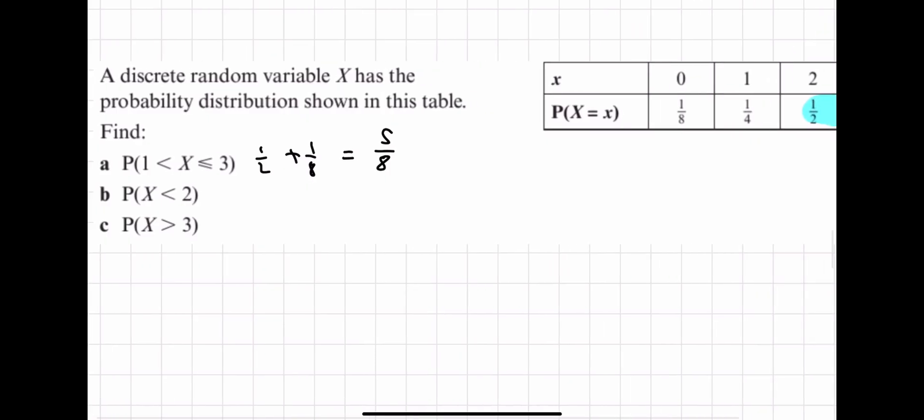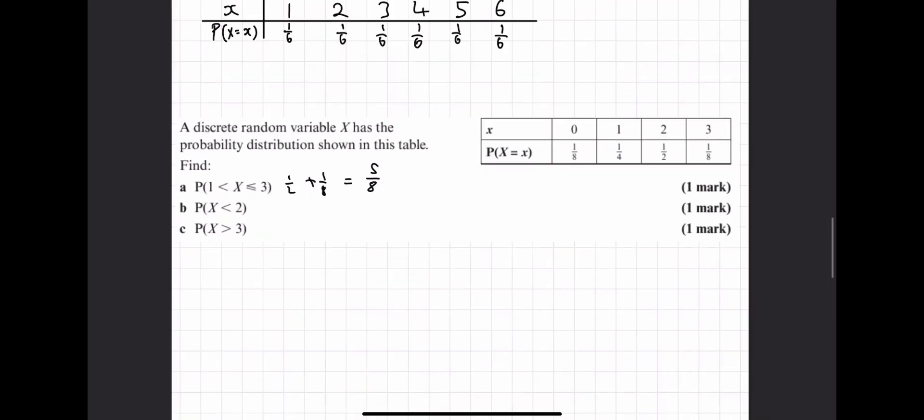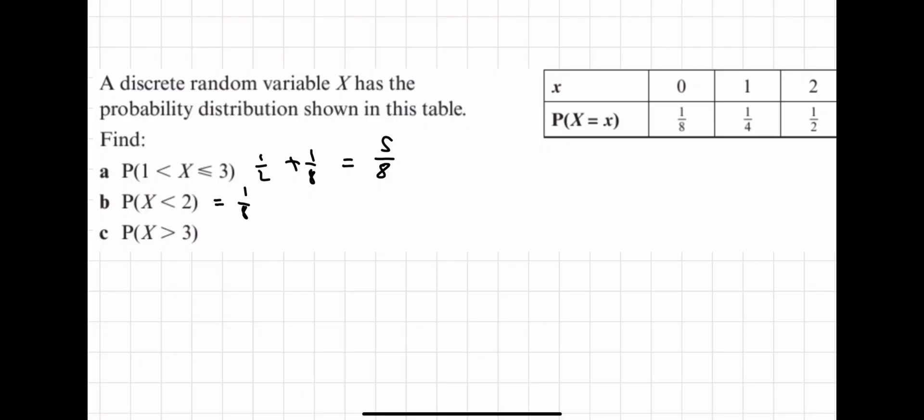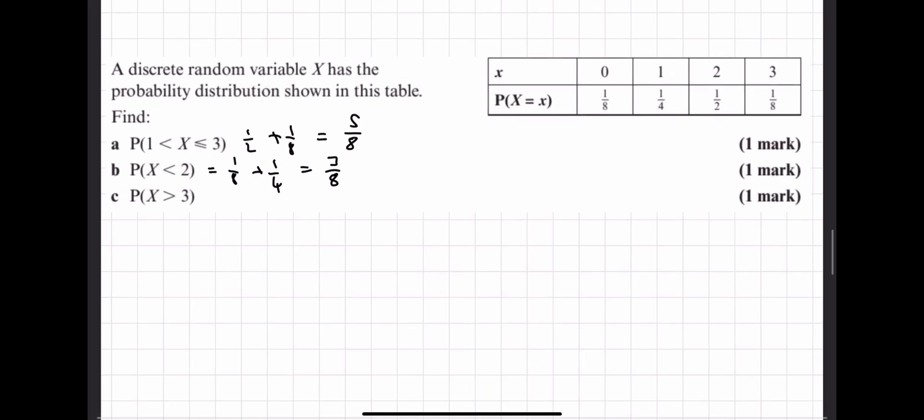The probability that X is less than two, that must mean it can either be zero or one. So in that case, you have one-eighth plus one-quarter. And then again, you can go straight to your calculator if you want and do one-eighth plus one-quarter. And you get three-eighths. And the probability that X is greater than three, well if you check, these are all your possible outcomes. You have one-eighth, one-quarter, one-half, and one-eighth again. These all add up to one. These are your only possible outcomes you can have. So the probability that X is greater than three is equal to zero, because it's impossible. These are the only outcomes you can have.